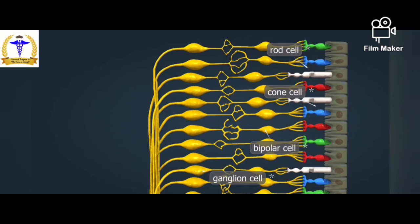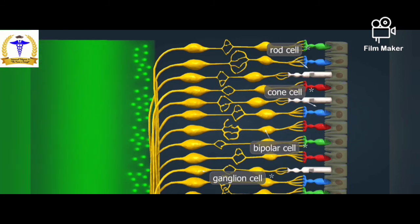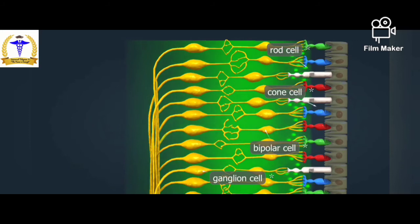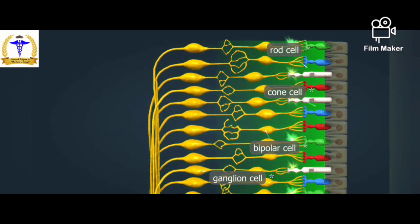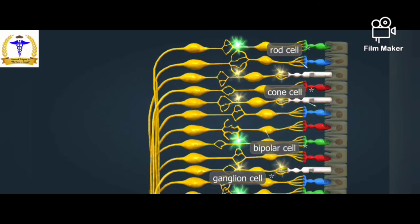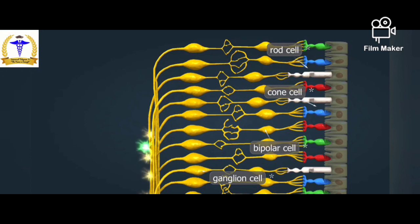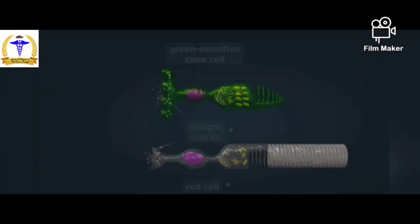Color blindness means that a type of cone cell is missing or does not work properly. The most common type of color blindness is red-green dichromacy — a difficulty in distinguishing between red and green colors. When all three types of cones are involved, total color blindness or monochromacy occurs.